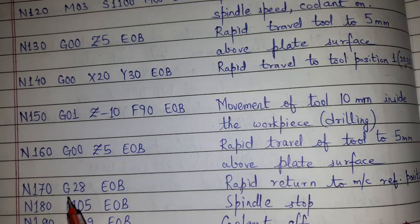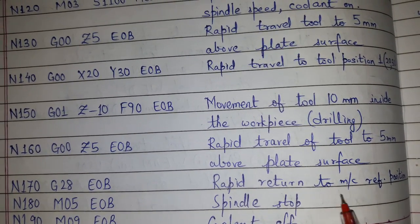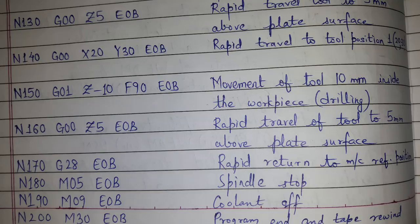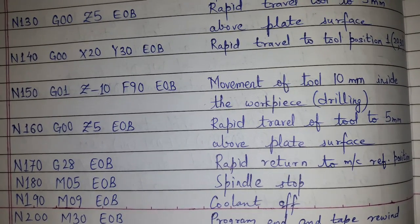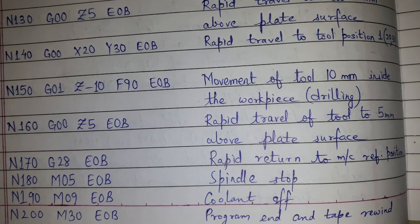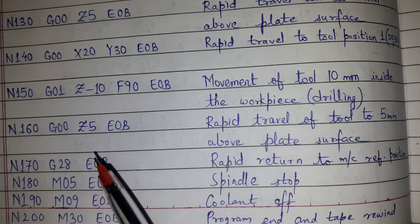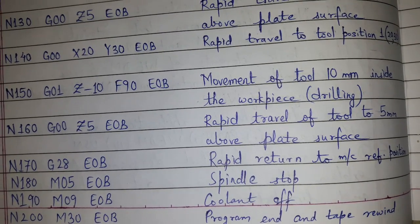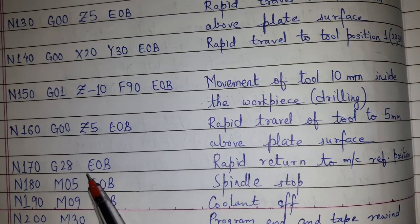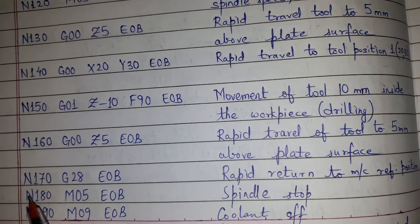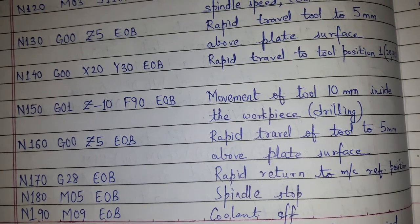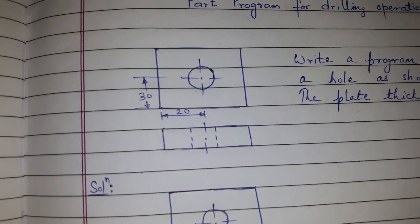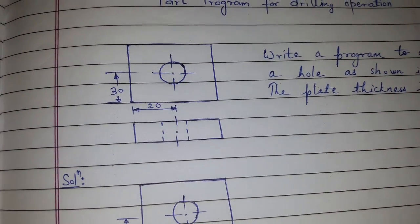Then G28 for rapid return to the machine reference position, M05 for spindle off, M09 for coolant off, and M30 for program end and tape rewind. This last block — spindle off, coolant off, and program end — is normally the same for most programs. Every block includes EOB, end of block, on the right-hand side with the sequence number on the left. This concludes part programming for the drilling operation.